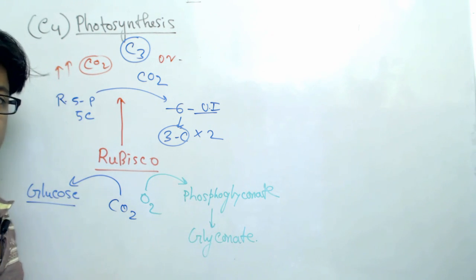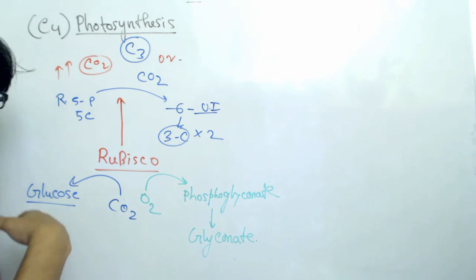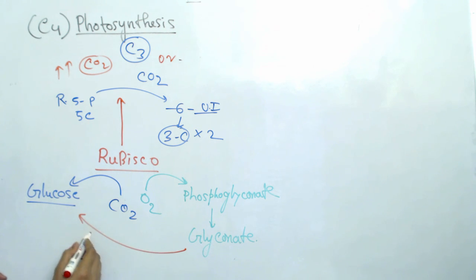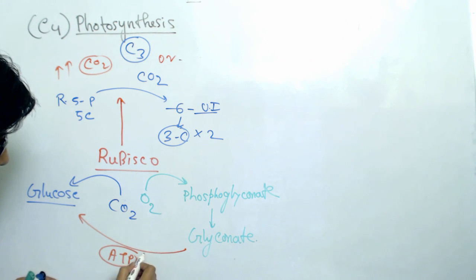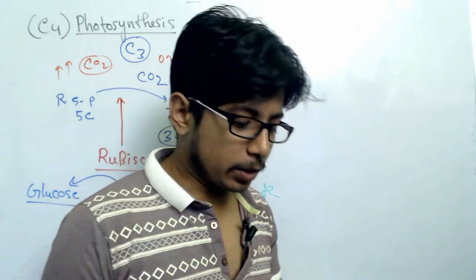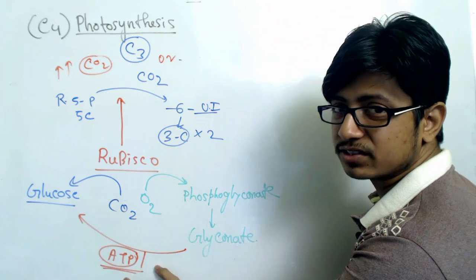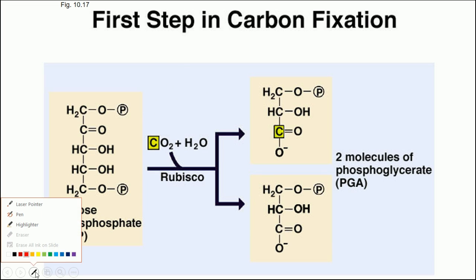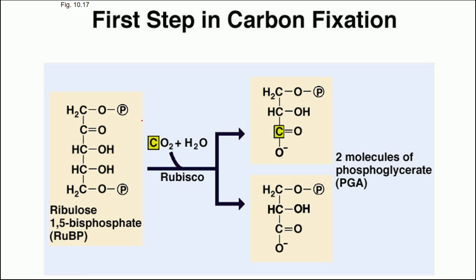Once glycolate is made, it is not a natural compound for producing glucose — it requires several different steps and extra energy to finally produce glucose. This extra energy is wasted, because through the normal C3 pathway you can directly produce glucose without investing this extra energy. So the first step of carbon fixation is the most important step of the Calvin cycle, and it requires RuBisCO, which has two separate activities: fixing carbon (carboxylase activity) and fixing oxygen (oxygenase activity). Fixing oxygen is a waste of energy.